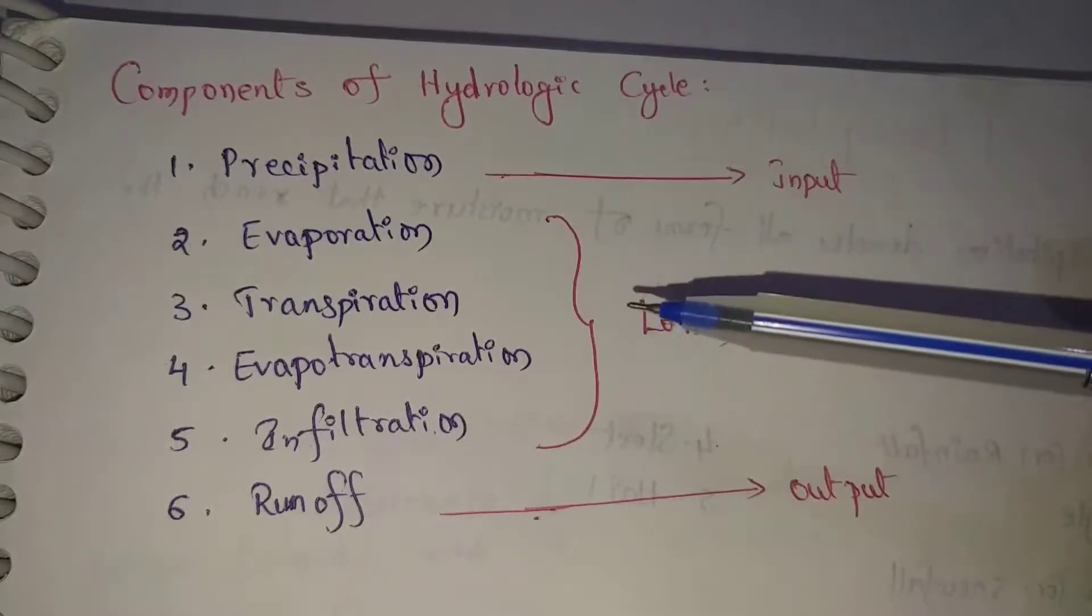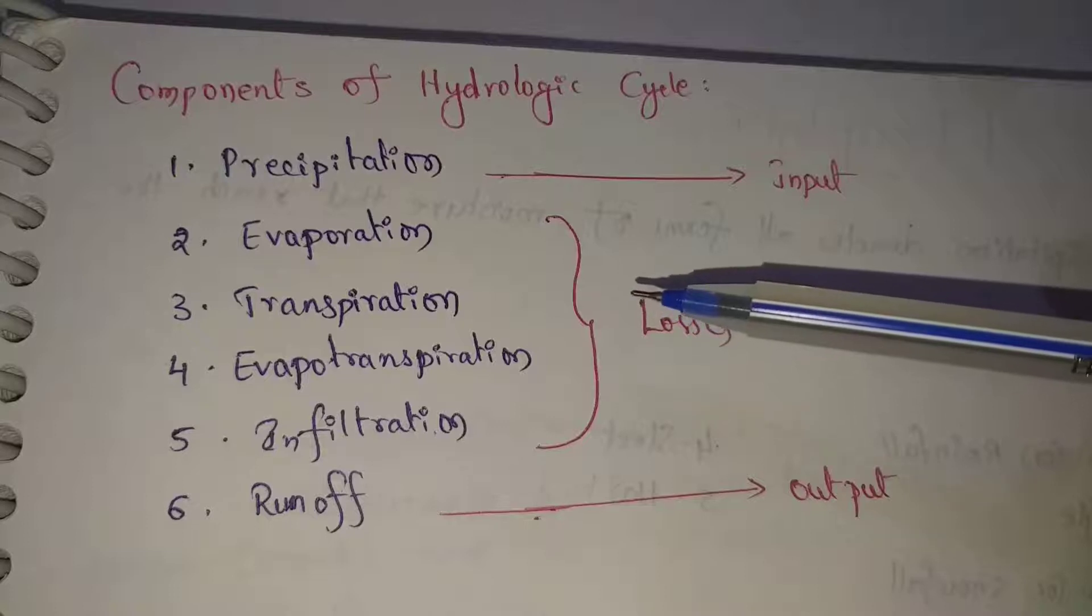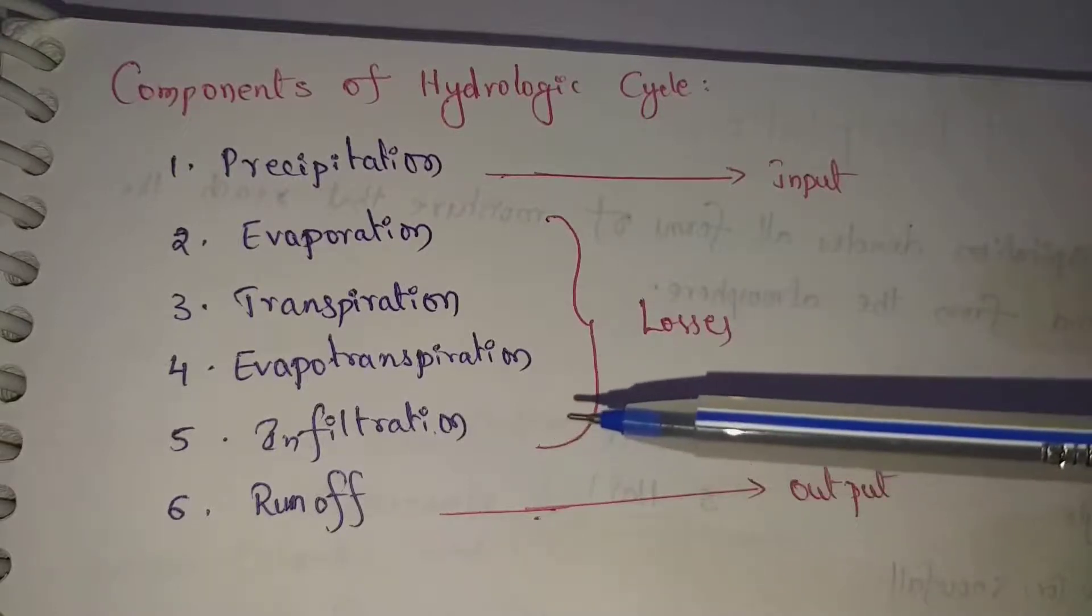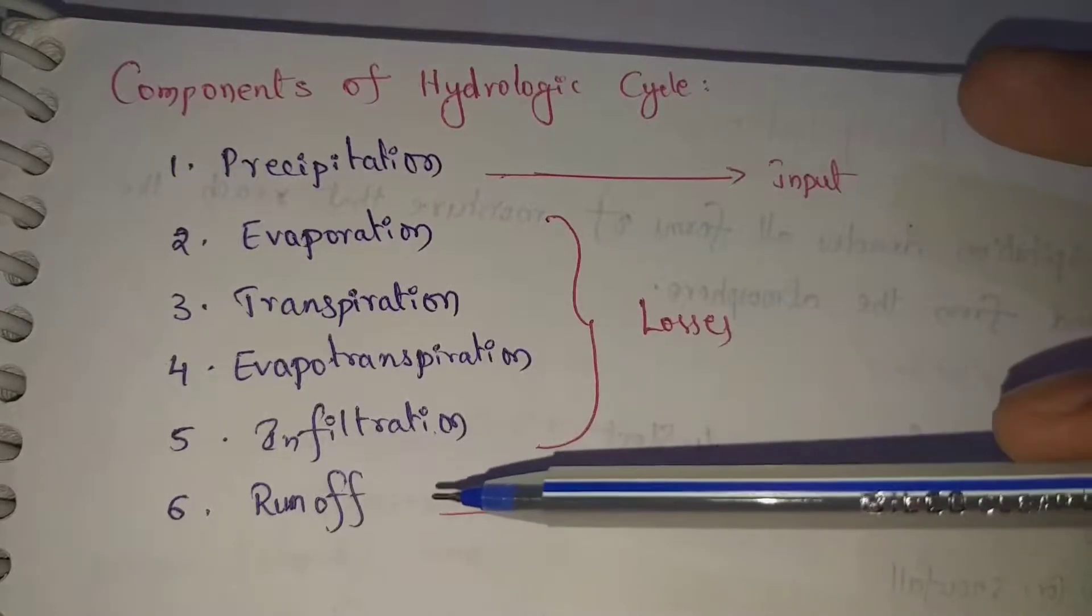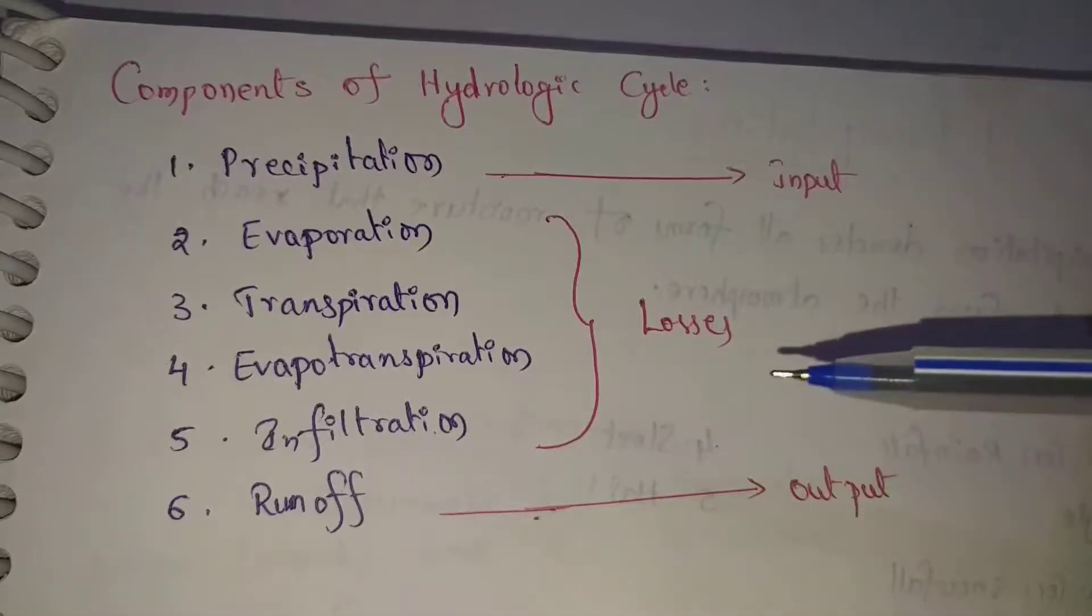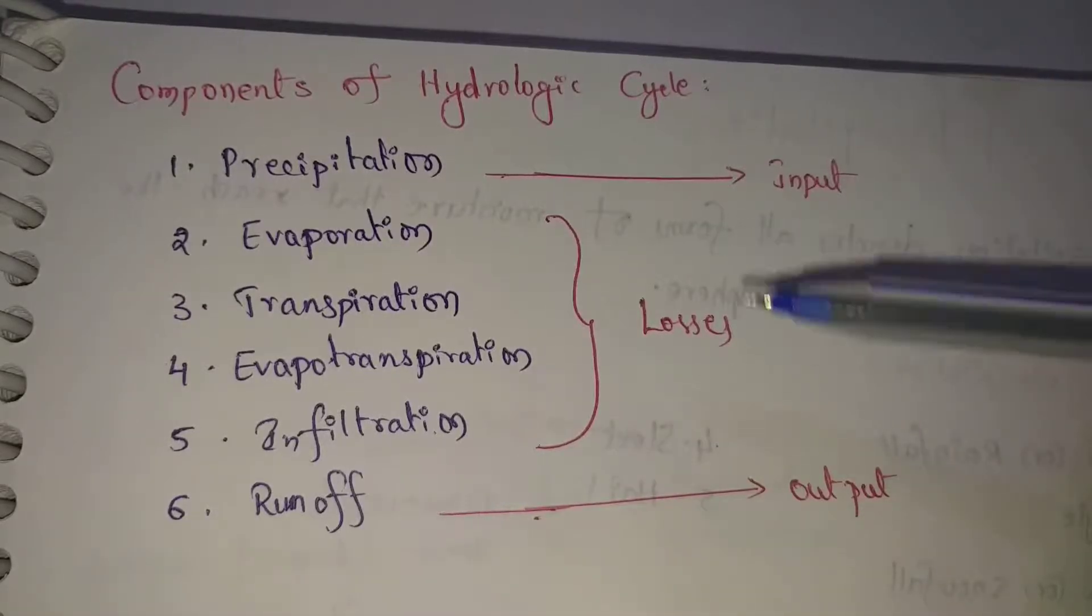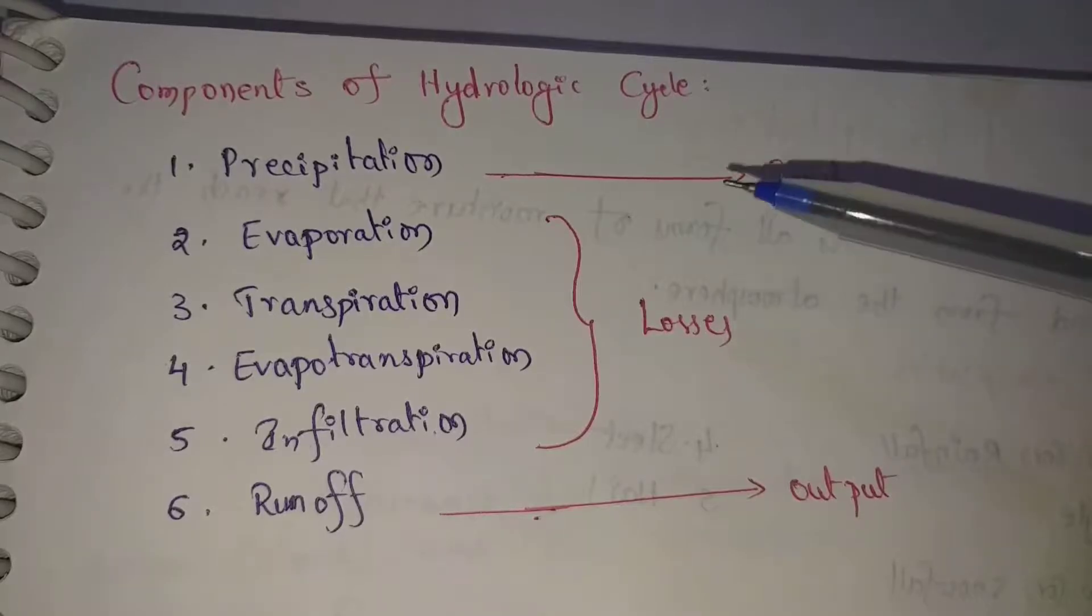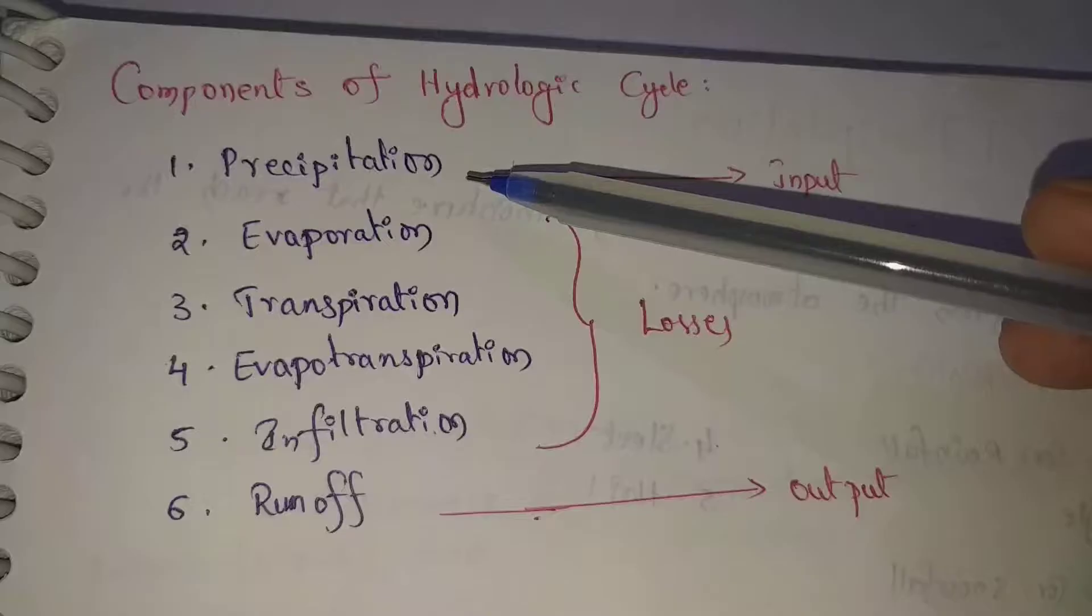Infiltration is water loss as water seeps into the ground. Water that flows becomes runoff, which finally reaches the river. This is the hydrologic cycle when rain falls.